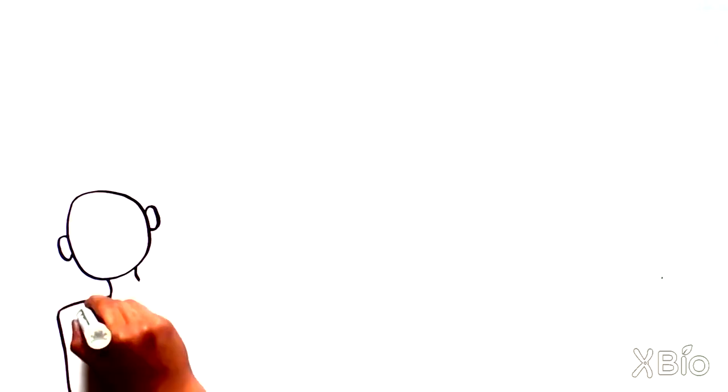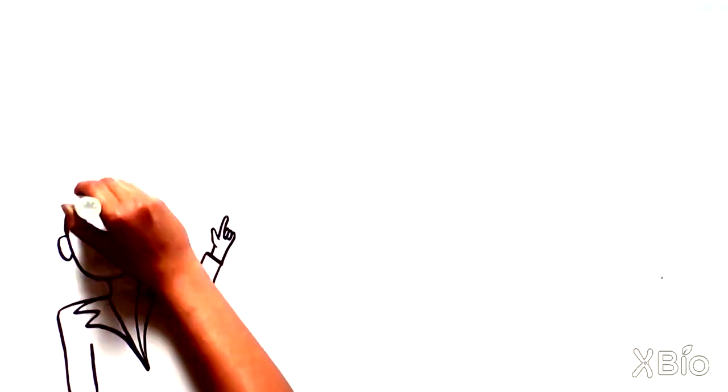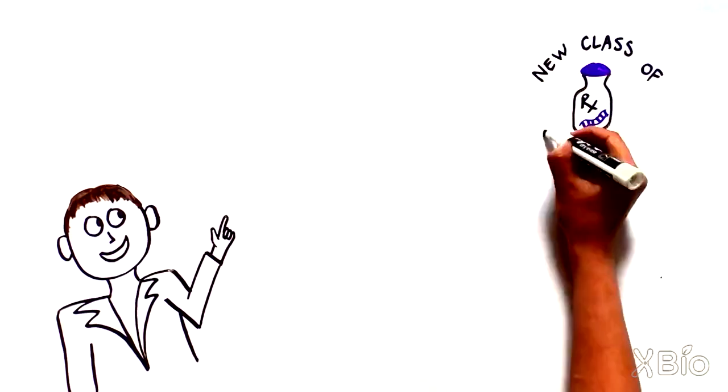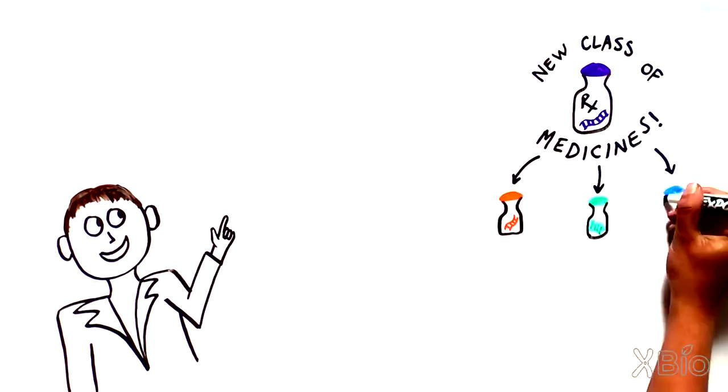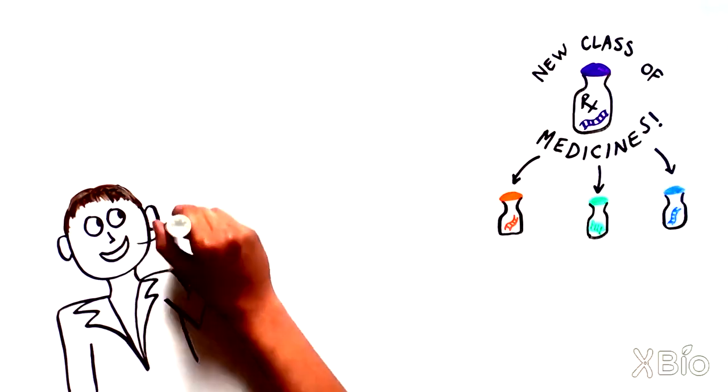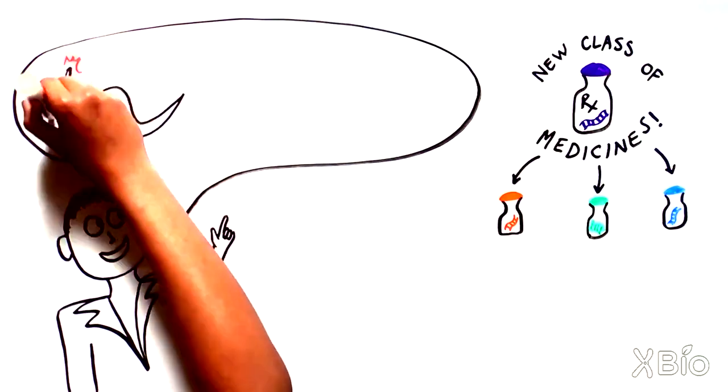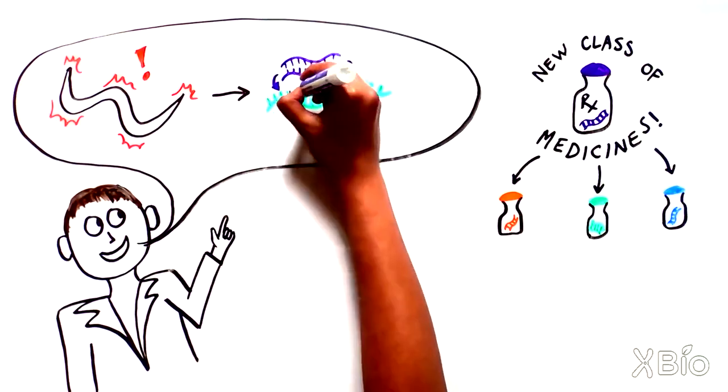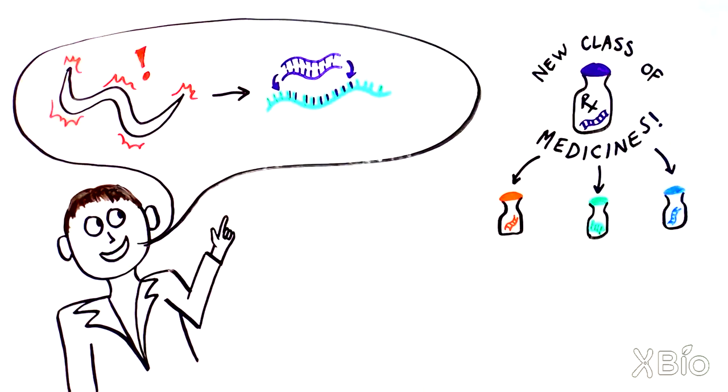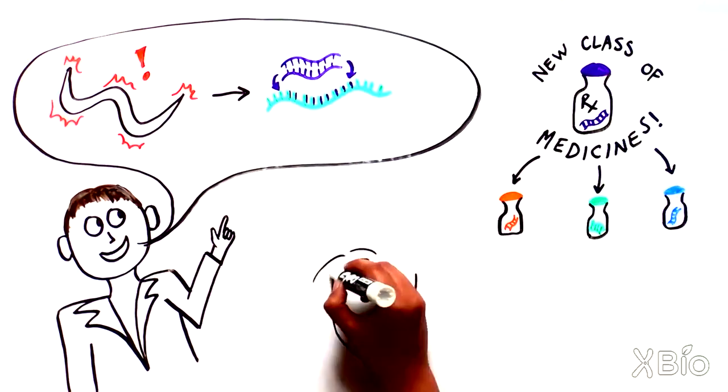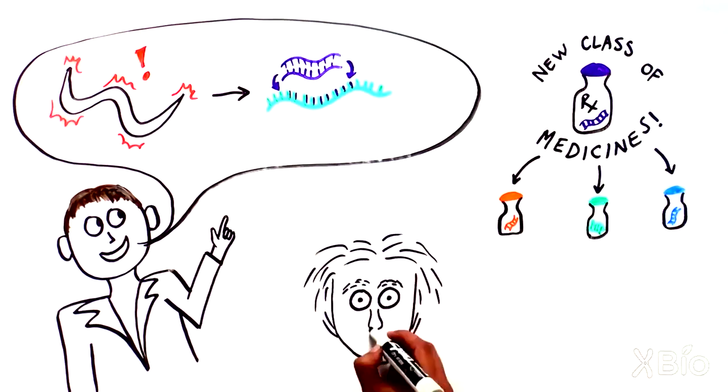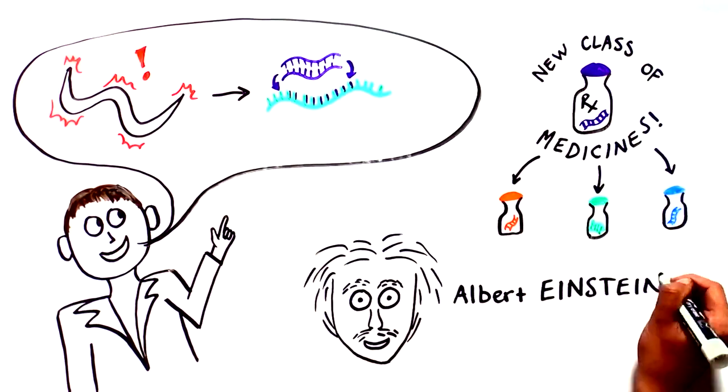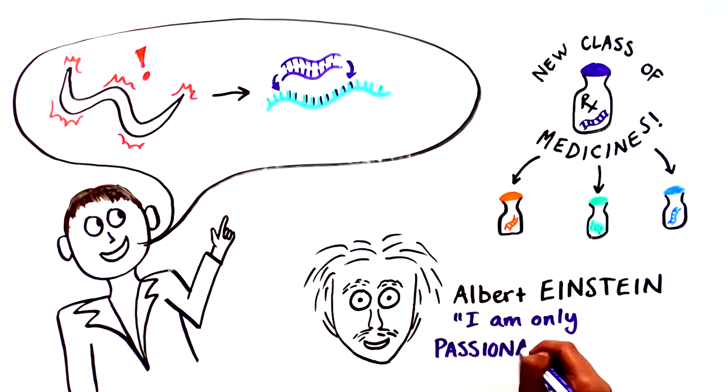This landmark approval ushered in an entirely new class of medicines for patients who had few options beforehand. Looking back, it's pretty incredible that an entirely new class of medicines all started with some twitching worms. But this is actually very typical of how science works. Breakthrough discoveries begin with curious scientists following unusual observations. Albert Einstein summed it up best by saying, I have no special talents, I am only passionately curious.